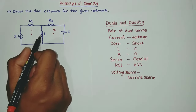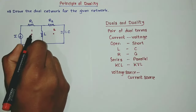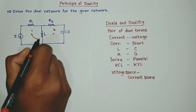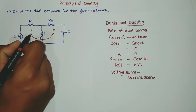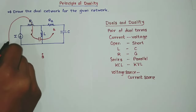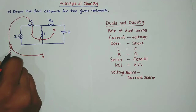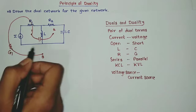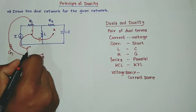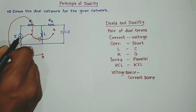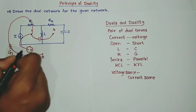From node one to two we are having an inductor. The pair for inductor is capacitor, so you can draw a line and use a capacitor here. Then while moving from one to three we are having one resistance. Resistance is replaced by conductance, so let us write R1 replaced by G1. Now again, between one and three a current source is there. The current source is replaced by a voltage source. The current source is in the downward direction, therefore the positive sign will be toward node three and negative toward node one.